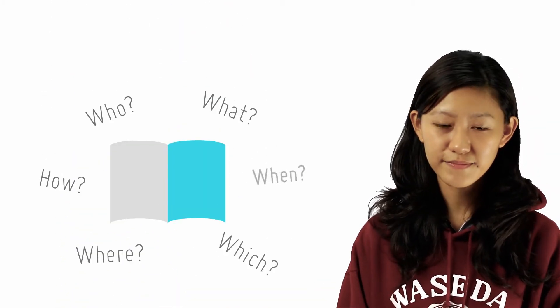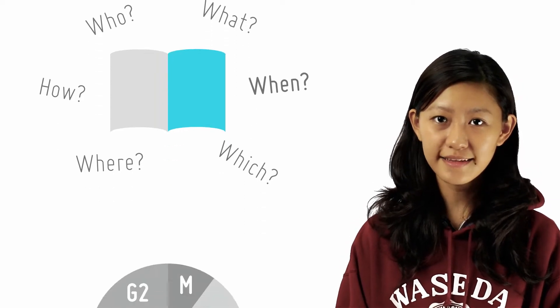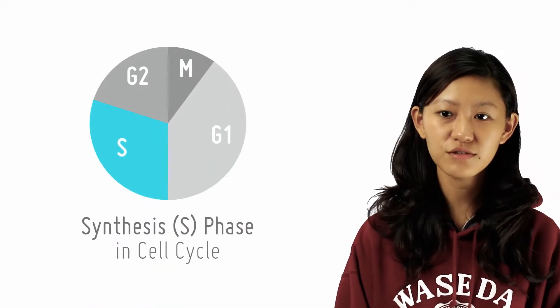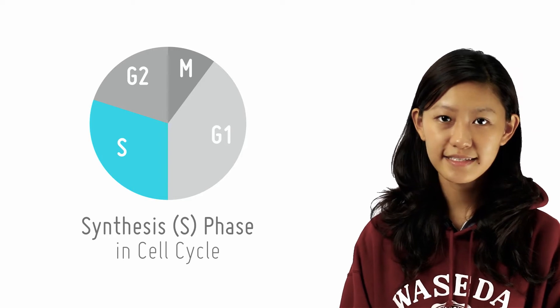Next is when. When does DNA replication take place? It takes place during the S phase of the eukaryotic cell cycle. S stands for synthesis.